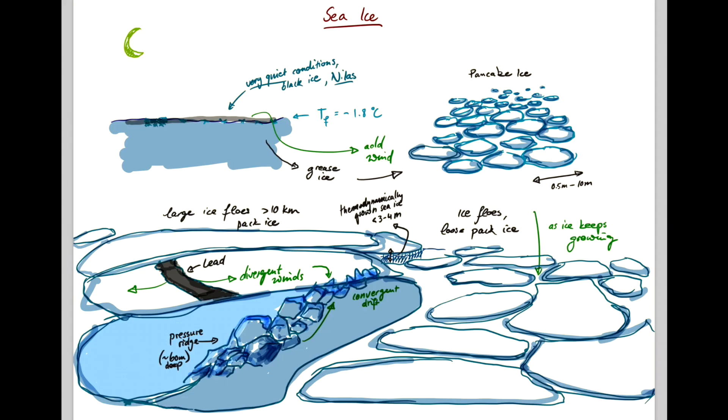And the final thing to mention is that these small ice types, Nilas, grease ice, pancake ice, smaller ice flows and loose pack ice, that I'm giving these asterisks.